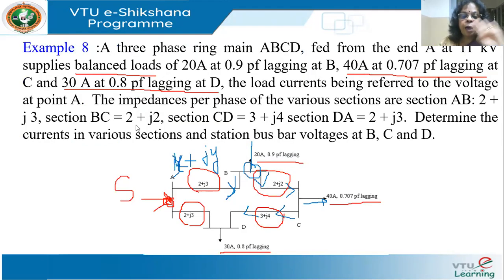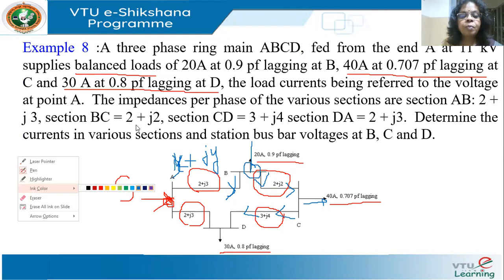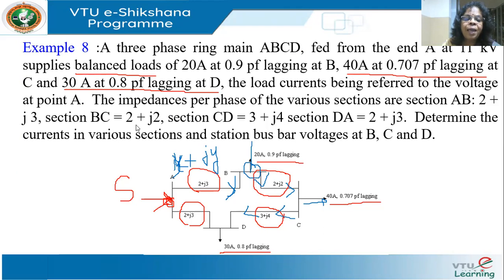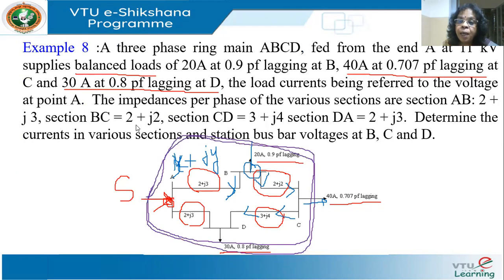Now I have expressions for the currents in all sections in terms of X and Y. I don't yet know X and Y. If I apply KVL around the loop AB, BC, CD, DA, the sum of all voltage drops equals zero because there is no source inside the loop: VAB + VBC + VCD + VDA = 0.